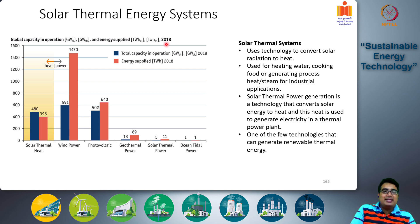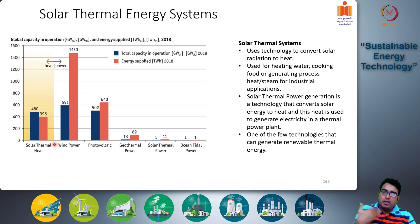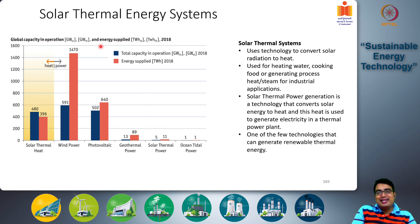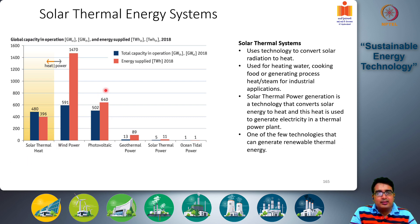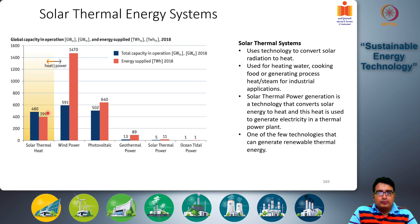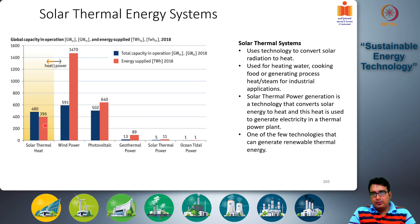These are 2018 values comparing the heat consumed worldwide sourced from solar thermal energy systems versus electrical energy from renewable sources. Solar thermal heat total capacity is shown in gigawatt-thermals, and the actual energy supply is in terawatt-hours. The total capacity in gigawatt-thermals is around 480, and the actual energy supply is 396 terawatt-hours.